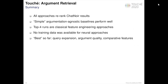In general, all approaches received for the second task use Anserini to access ClueWeb12 and generate a list of document candidates for further re-ranking. We also saw that a simple augmentation-agnostic baseline performs quite well. Top five runs are classical feature engineering approaches, and we didn't have training data for neural approaches this year — this will change next year. Best performing approaches share common features such as query expansion, accounting for argument quality, or identifying comparative features.